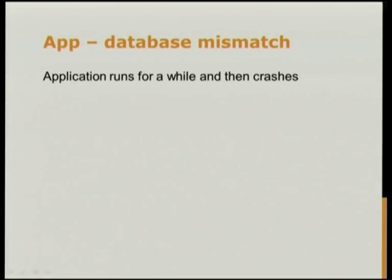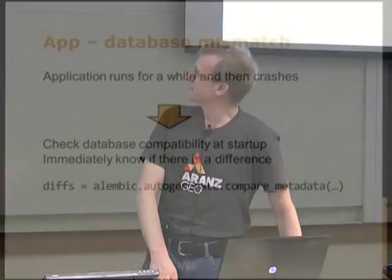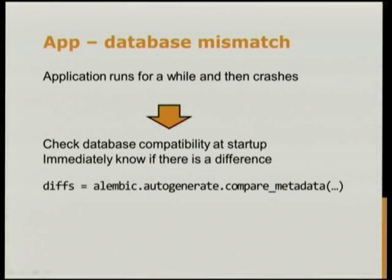We also had a lot of problems with running up the application — it talks to the database and runs along fine for a while until it hits the bit that's not there. Now, whenever we start up the application, we check the schema in the database matches the schema in our ORM. We use Alembic's compare_metadata command, which produces a list of diffs — exactly how the auto-generate command works — and we just check if that list's length is zero. Checking the version number alone is not enough, because you might change a table in the ORM, go have coffee, come back, and the versions are the same but the schemas are actually different.